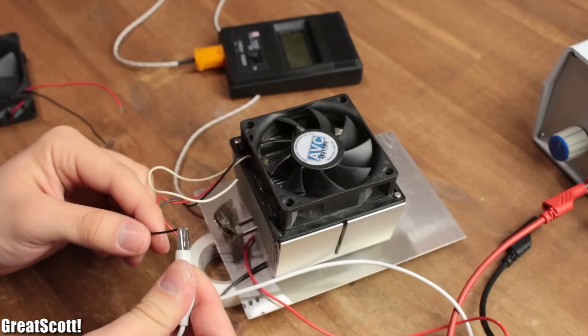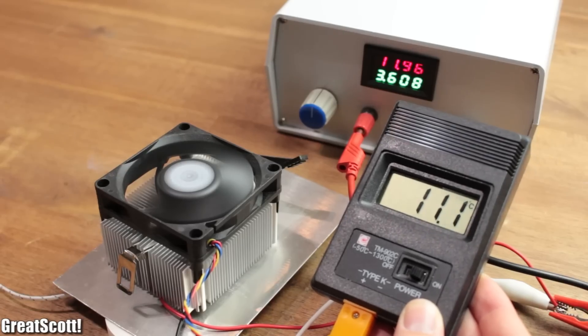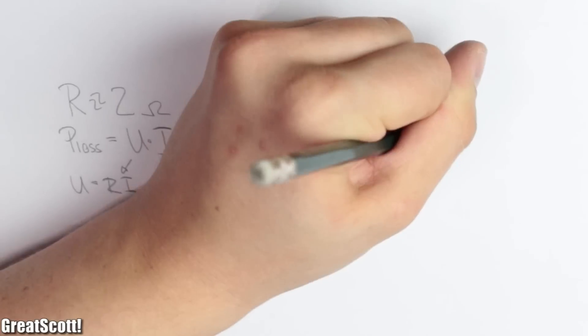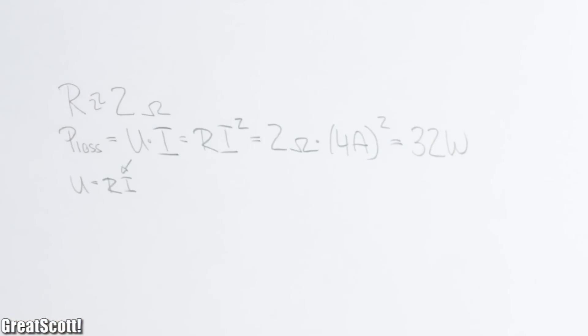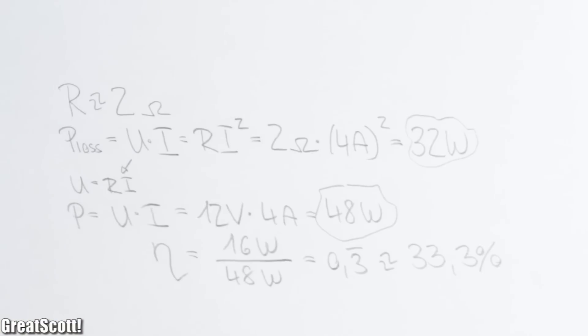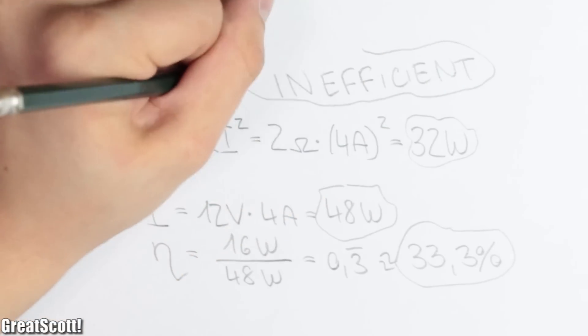But please, don't think this is an efficient way to cool your drinks. If I use the substitute resistance from the datasheet of around 2 ohms, we get a power loss of 32 watts at 12 volts with a current draw of 4 amps. This equals out to an efficiency of only 33.3%. That is terrible.